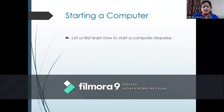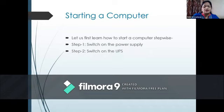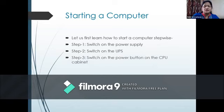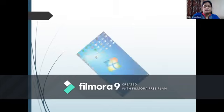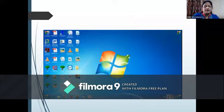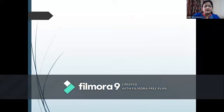Let us first learn how to start a computer stepwise. Step 1: Switch on the power supply. Step 2: Switch on the UPS. Step 3: Switch on the power button on the CPU cabinet. Step 4: Switch on the monitor. After some time, a screen will appear. It is called the desktop. This is the picture of the desktop, which is the first screen of the computer when it starts.